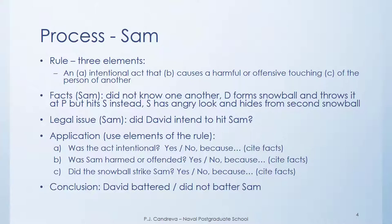Second element: was Sam harmed or offended? We know Sam had an angry look on his face, said 'what the heck,' and hid from the snowball fight, implying he did not want to be engaged. So it's logical to say Sam at least found this offensive. Lastly, did the snowball strike Sam? Yes, it hit Sam squarely in the back. So all three elements are met: David performed an intentional act, it caused an offensive touching, and it touched another person. We conclude that David battered Sam.